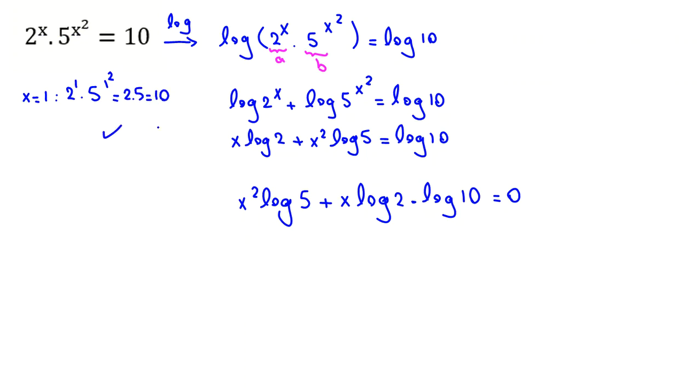So, x1 is one answer. Because x1 is one answer, we want to factorize. I write one of them x minus 1. Now, here, I have x squared log 5. So, to create x squared log 5, I place here x log 5.